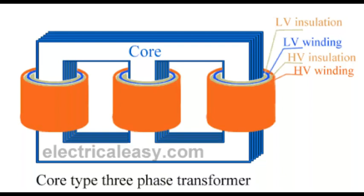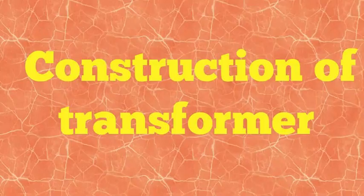These three coils provide three different phases of alternating current or voltage. They have different voltage, different current, and different power with a phase angle of 120° — this is also known as the three-phase core type transformer.